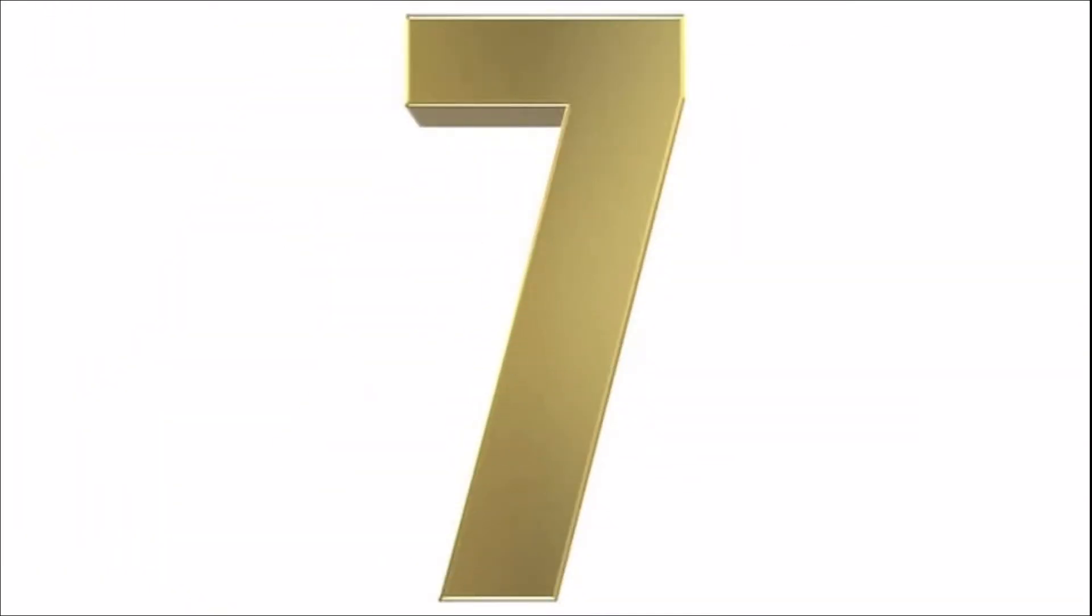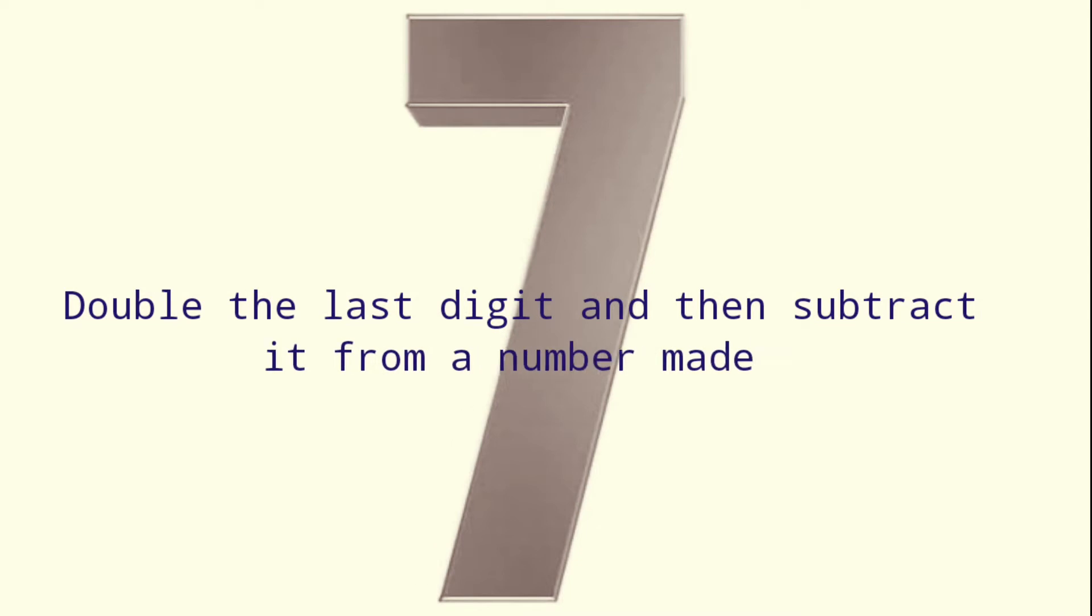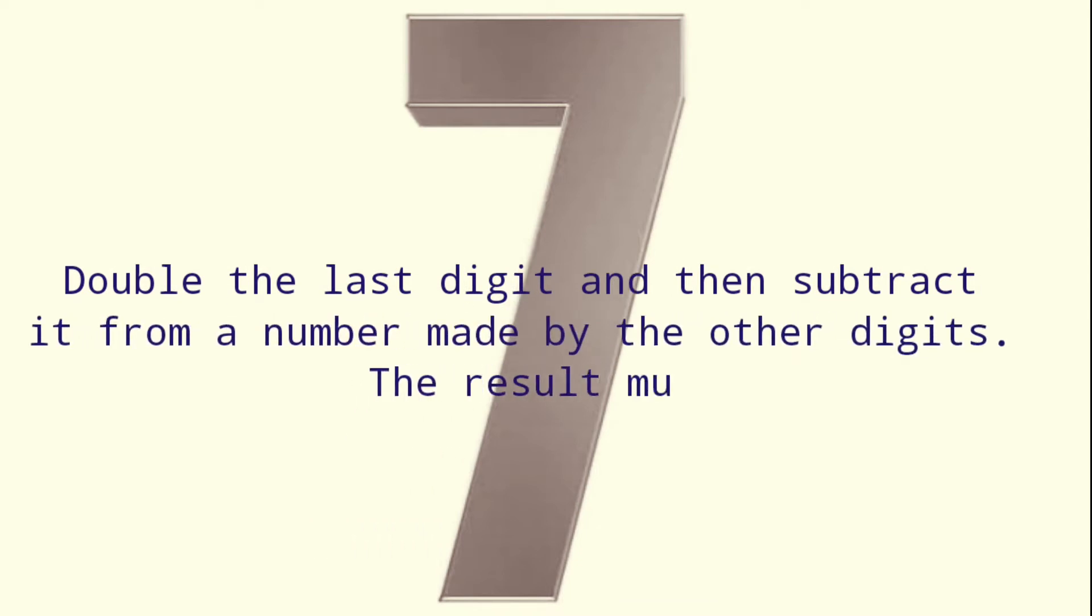Divisibility rule of 7: Double the last digit and then subtract it from a number made by the other digits. The result must be 0 or divisible by 7.